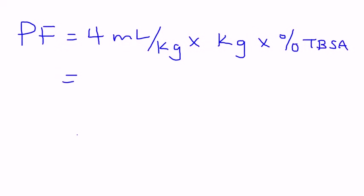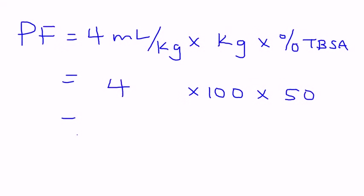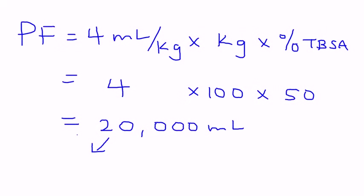For example, if you have a man that's 100 kg and 50% of his body was involved in the burn, it would be 4 times 100 times 50, which is 20,000 mLs. That's how much fluid the patient needs to be given in the first 24 hours after the burn. This is broken up into two halves.